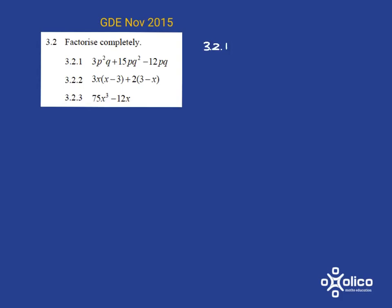So let's start with 3.2.1. That pretty much to me looks like we're talking about a common factor that needs to come out. So let's look across all the numbers. We've got a 3, a 15 and 12. What number can divide into all of those? Well, clearly it's going to be 3. So we can pull a 3 out.